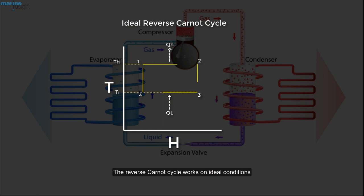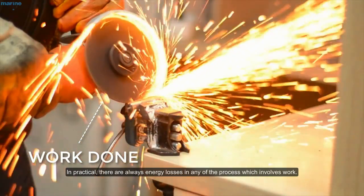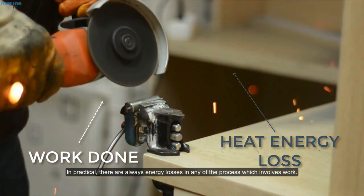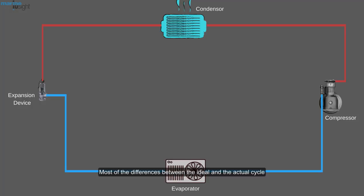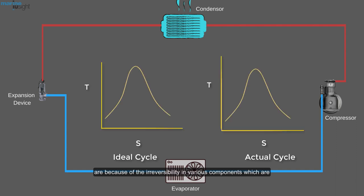The reverse current cycle works on ideal conditions. In practical, there are always energy losses in any of the process which involves work. Most of the differences between the ideal and the actual cycles are because of the irreversibility in various components.